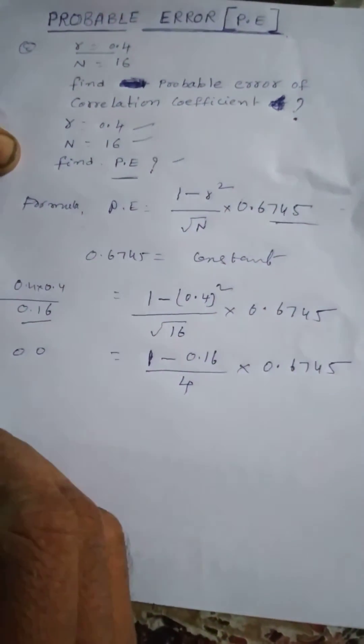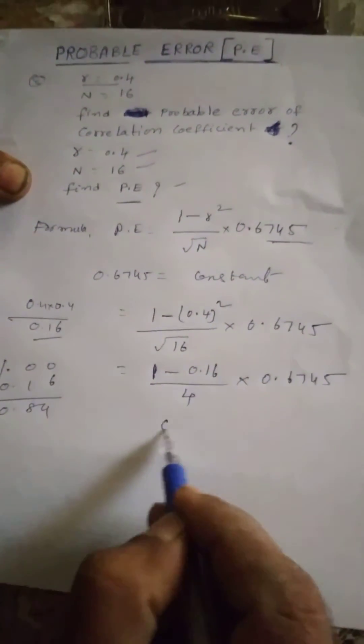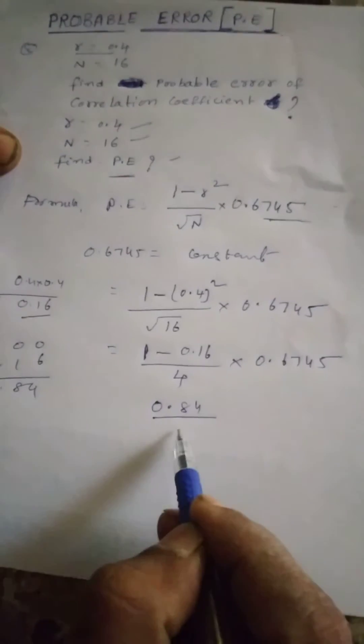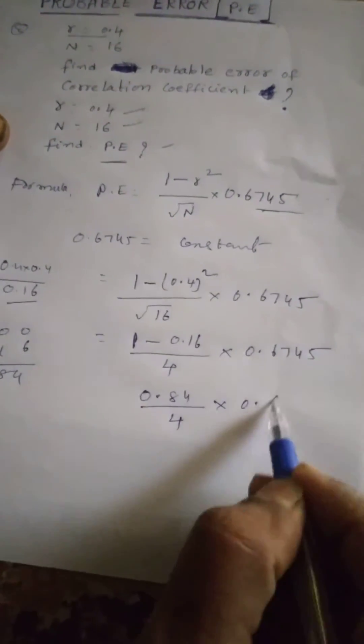And root 16 equal to 4 into 0.6745. So, 1 minus 0.16 equal to 0.84. 0.84 by 4 into 0.6745.